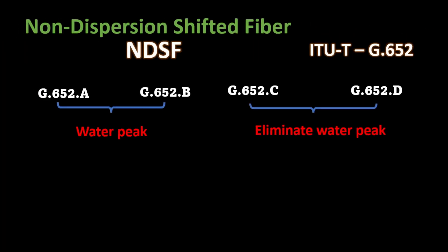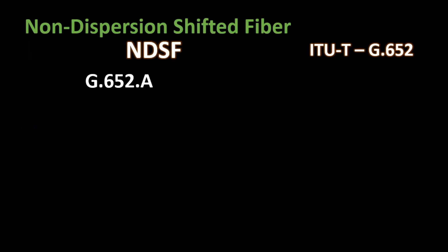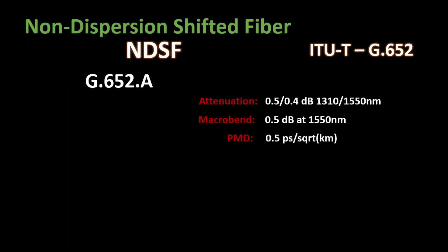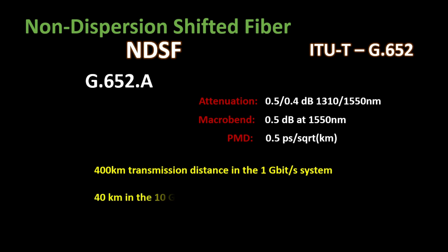That is the reason A and B are less used, and C and D were improved to eliminate the water peak. G.652A fiber has 0.5 dB attenuation at 1310 nanometers with 0.5 picosecond PMD — that is polarization mode dispersion. With these characteristics, a 1 Gbps signal can travel 400 km, a 10 Gbps signal can travel 40 km, and a 40 Gbps signal only 2 km.